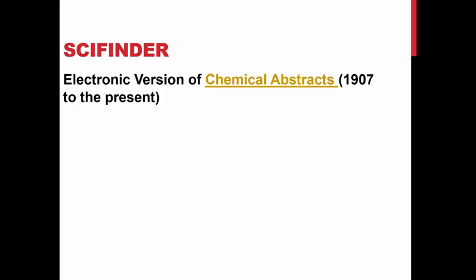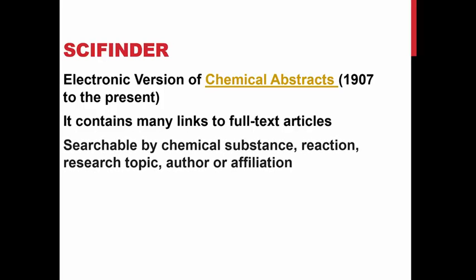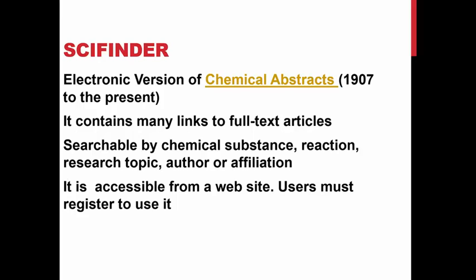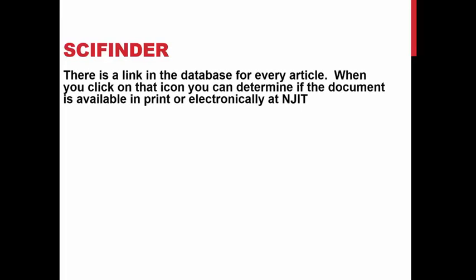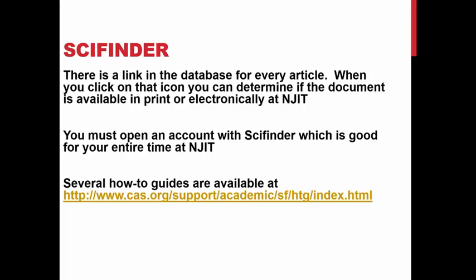SciFinder is a chemistry database. It's an electronic version of Chemical Abstracts from 1907 to the present. It contains links to full-text articles and is searchable by chemical substance, reaction, research type, author, or affiliation. You have to register to use it — you only have to register once and then you have the account for as long as you're a student at NJIT. There's a link in the database for every article, and you can click there to see if the article is available to us at NJIT. The databases also have how-to guides.